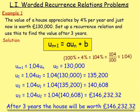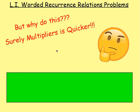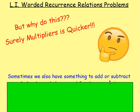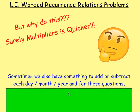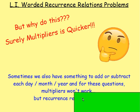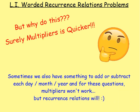Now, I can hear Olivia shouting at the screen — she's saying why would you bother doing this? Surely using multipliers the old way from National 5 is so much easier and quicker. And Olivia, you are perfectly right. However, in Higher, you also have to add or subtract something on the end. Sometimes we also have something to add or subtract every single day, month, week, or year. For these questions, multipliers the old-fashioned way will not work — but your recurrence relations will.